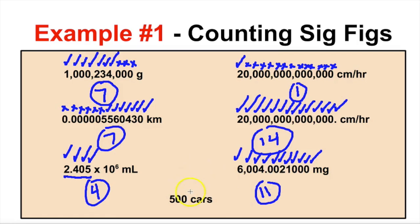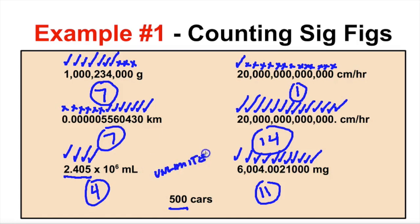Last but not least, we have 500 cars. How did we obtain this number? We must have obtained it from counting, so this is going to have an unlimited number of sig figs.